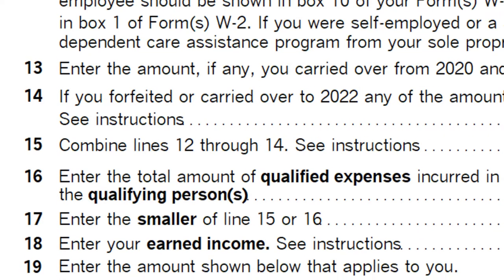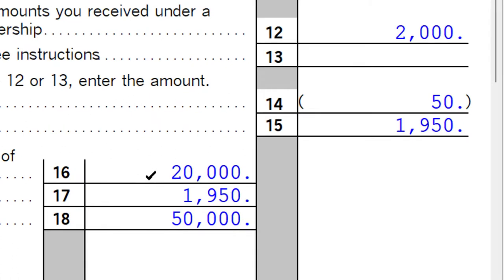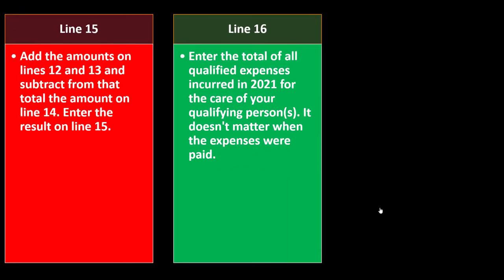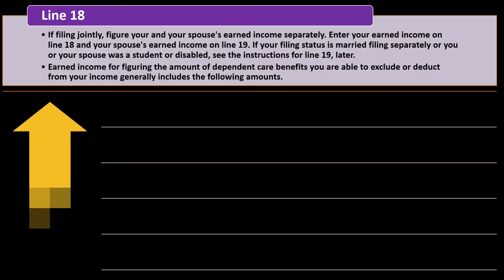Line 16: Enter the total of all qualified expenses incurred in 2021 for the care of your qualified persons — it doesn't matter when the expenses were paid. I put the total care amount of $20,000, which is over the $16,000 cap. Example: You receive $2,000 in cash under your employer's dependent care plan. The $2,000 is shown in box 10 of your W-2. Only $900 in qualified expenses were incurred in 2021 for the care of your 5-year-old dependent child. You would enter $2,000 on line 12 and $900 on line 16.